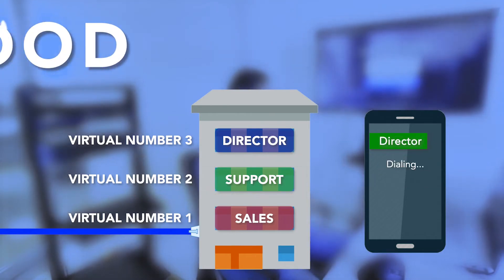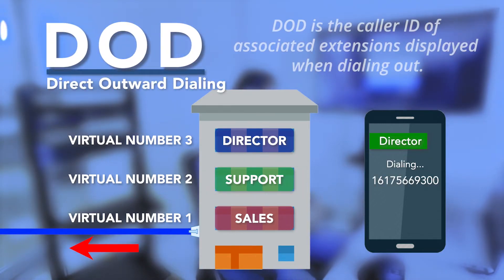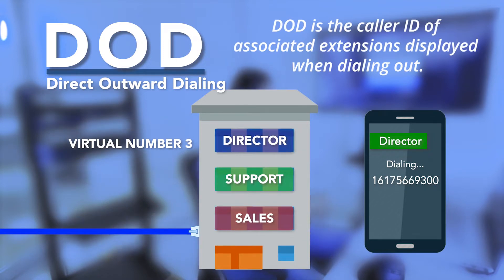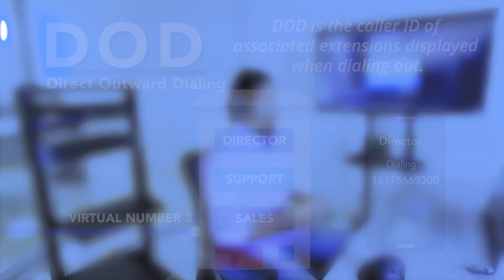On the other hand, DOD, or Direct Outward Dial, is a virtual number that is displayed to outside destinations when one or more extensions are linked to it and make outgoing calls. It is a way to help external destinations identify which extensions are making calls from a company.